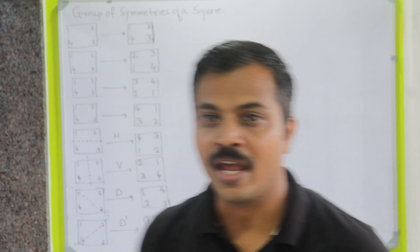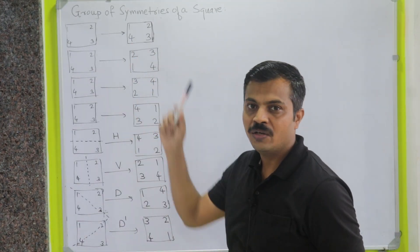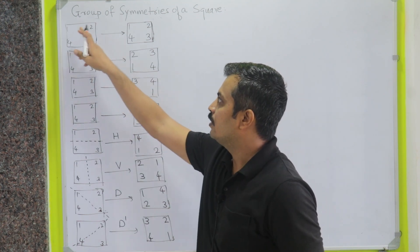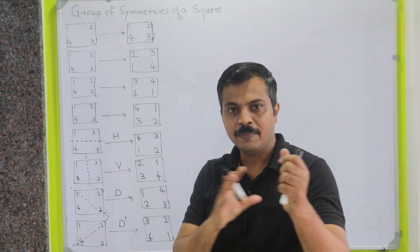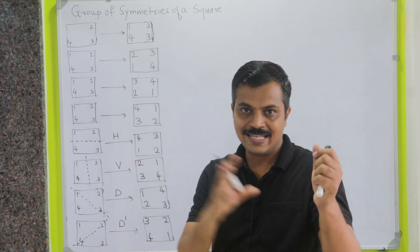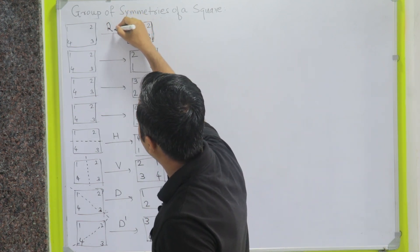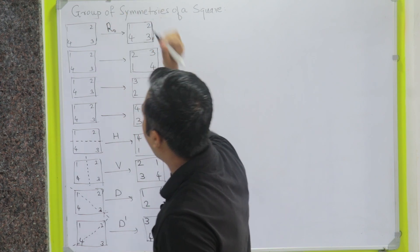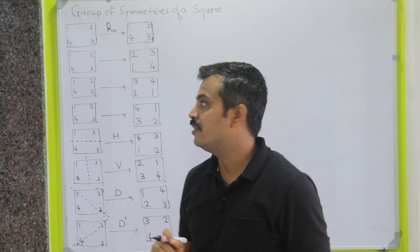After doing this activity, you will see that you get 8 different symmetries of a square, and that is exactly what I have written here. The first symmetry is R0 — you can put the square back as it is, unchanged. The 0 here refers to 0 degrees of rotation.